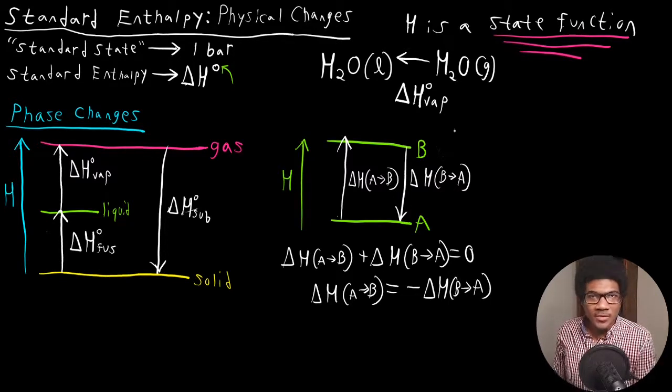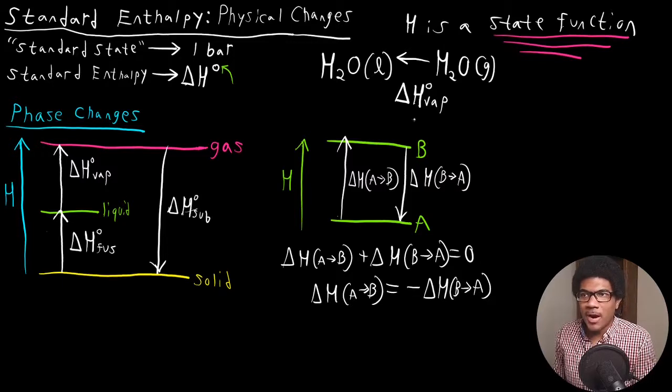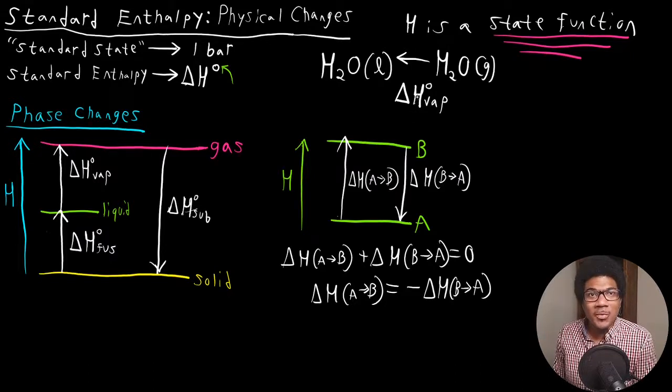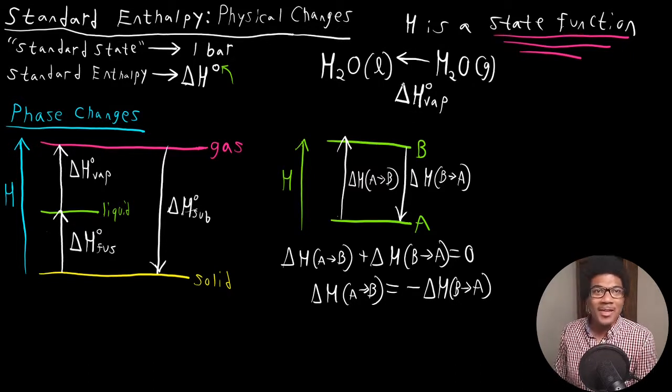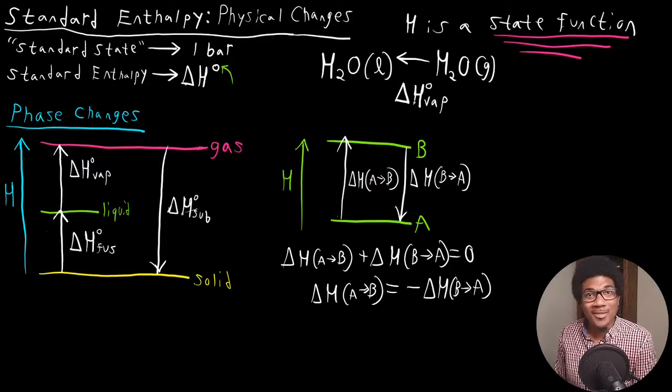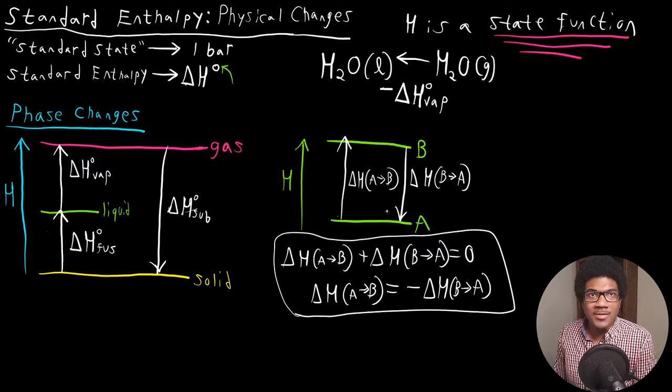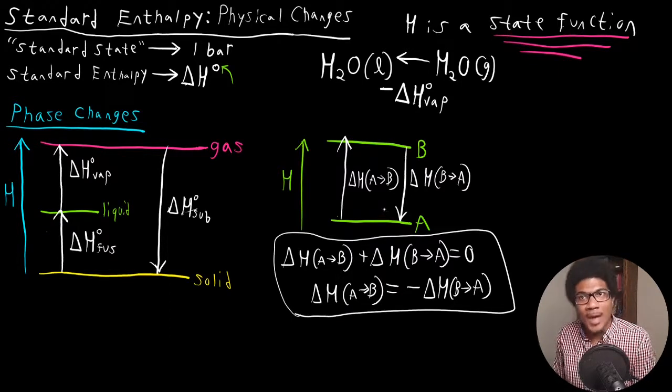What does this mean for our situation up here, our phase change? That means that if we have the enthalpy of vaporization, we intrinsically have the enthalpy associated with the condensation as well. Because all we have to do is just add a negative sign to the delta H vaporization. Because it's a state function and these two statements are true, we already have everything we need to get the enthalpy associated with the opposite process.